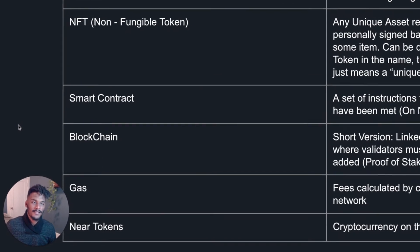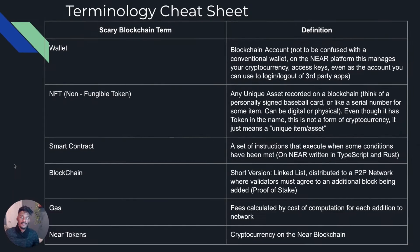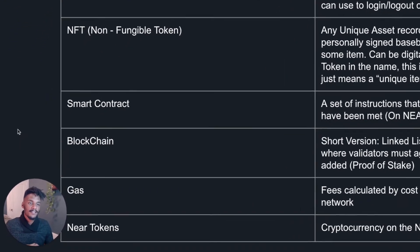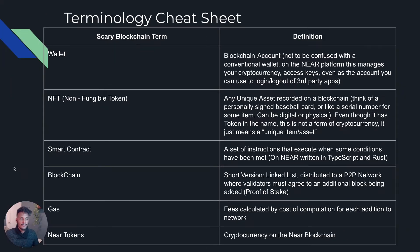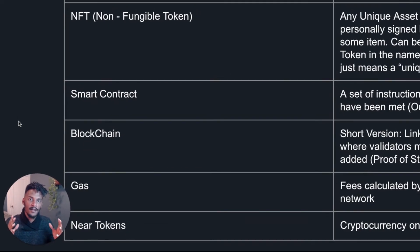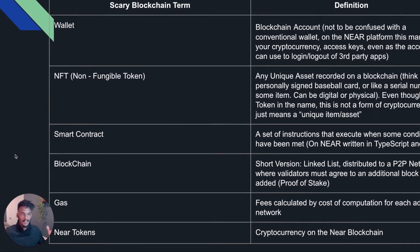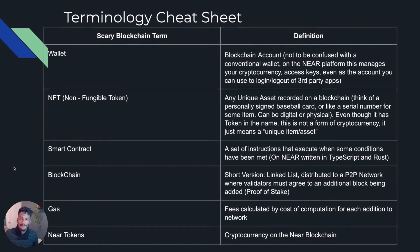We went over a lot of terms, so here's a summary cheat sheet. The first term is wallet, which is essentially your blockchain account — not to be confused with a conventional wallet that just holds your credit card or money. On the Near platform, the wallet manages your cryptocurrency, your access keys, and can even be used as the account to log into third-party applications. Kind of like how Facebook lets you log in to a slew of third-party applications across the internet — it's the same concept with the Near wallet for cryptocurrency accounts created on the Near blockchain.